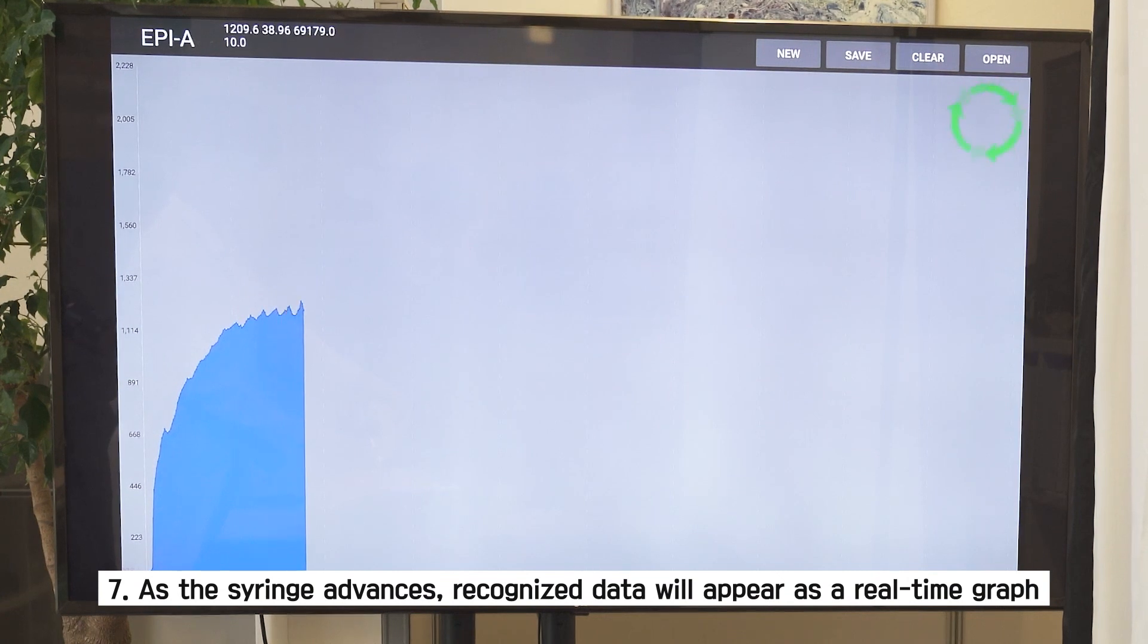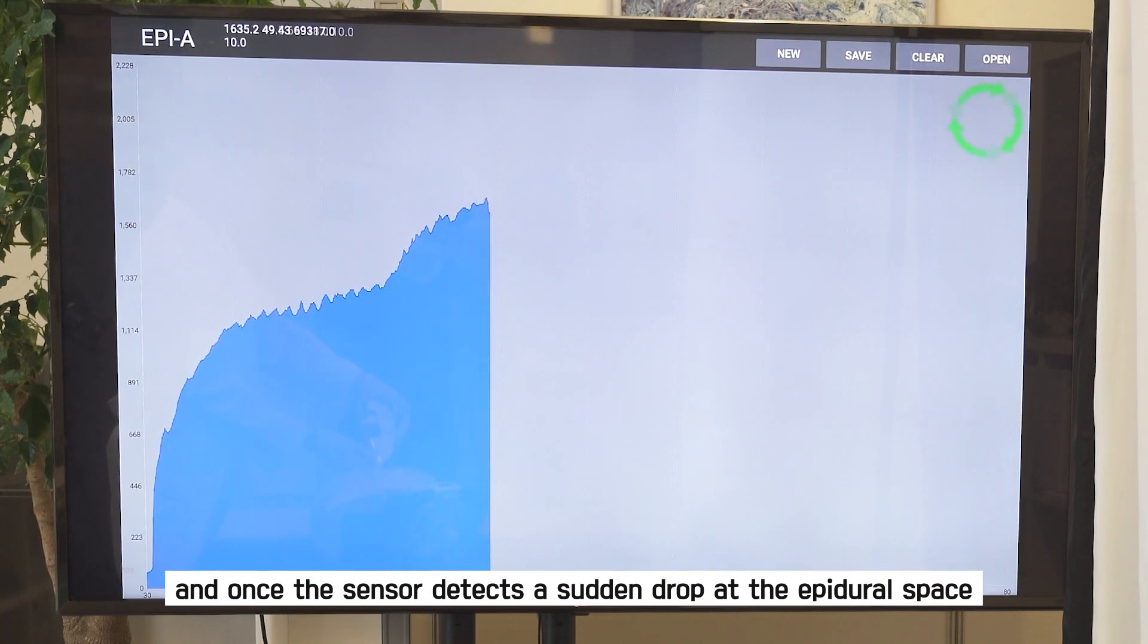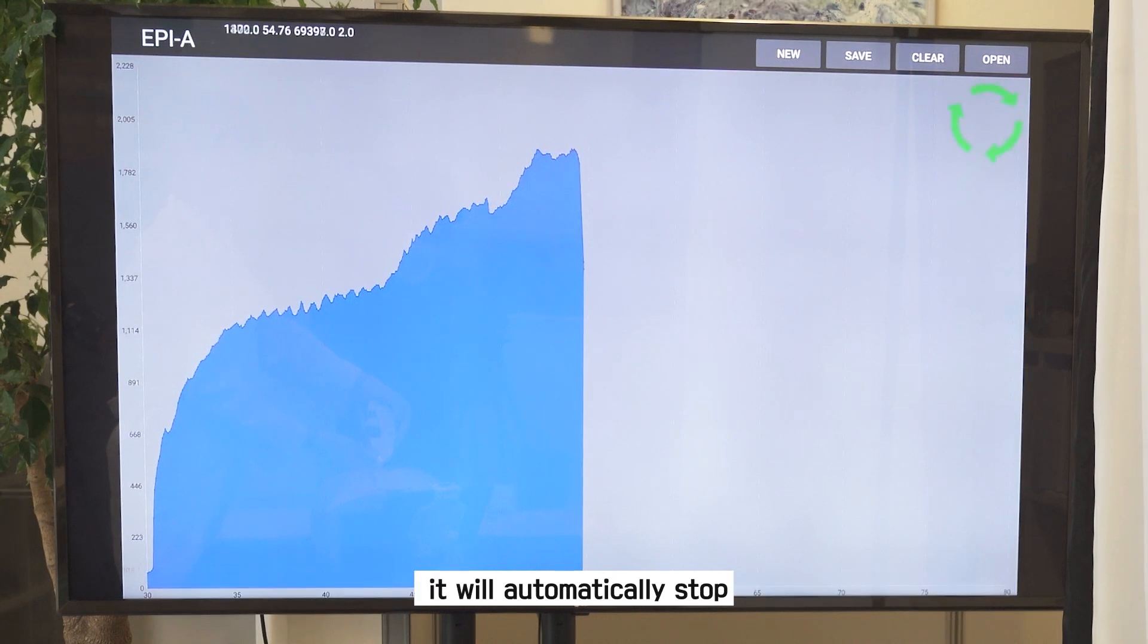Seventh, as the syringe advances, recognized data will appear as a real-time graph, and once the sensor detects a sudden drop at the epidural space, it will automatically stop.